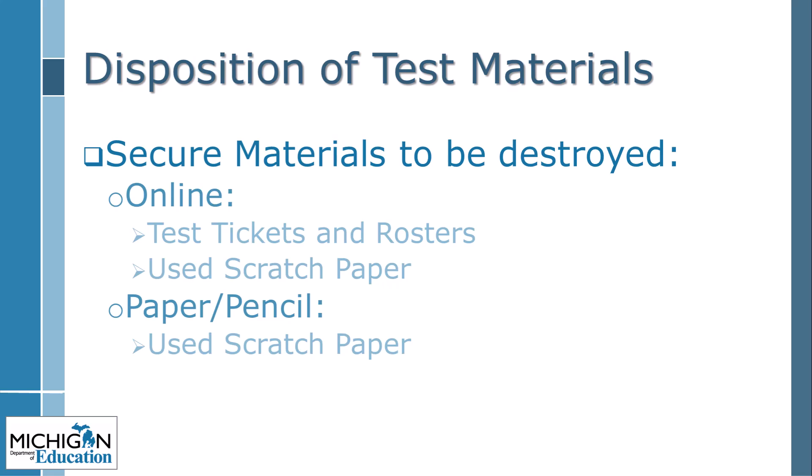Some secure materials must be destroyed after testing. For online testing, examples of secure materials include test tickets, rosters, and all scratch paper and graph paper used — these must be securely destroyed after test administration. For paper/pencil testing, all used scratch paper must also be securely destroyed. Be sure to review the Instructions for Materials Return section of the M-STEP Test Administration Manual.